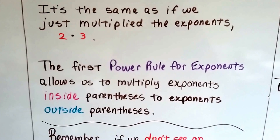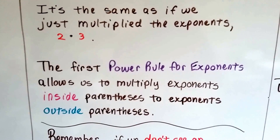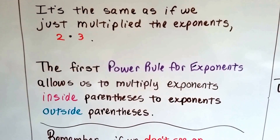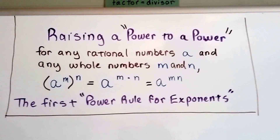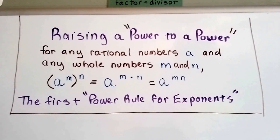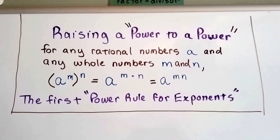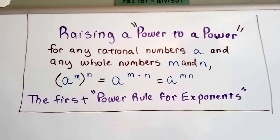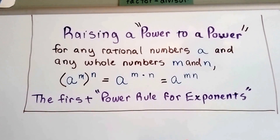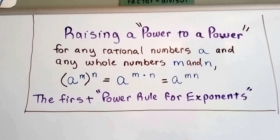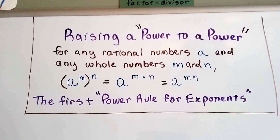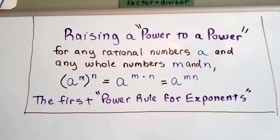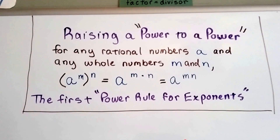The first power rule for exponents allows us to multiply exponents inside parentheses by exponents outside parentheses. Here's the formal rule — raising a power to a power, the first power rule for exponents. For any rational number a and any whole numbers m and n, if a to the m power is inside parentheses and n is the exponent outside, then it equals a to the m times n power. We just multiply those exponents.